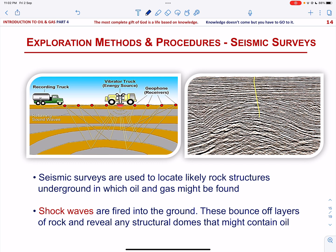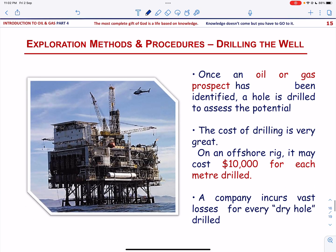Let us talk about drilling the well. A potential oil trap is called a prospect. Once a prospect has been identified, the next stage is to drill a hole into the top of the trap to see if it contains oil and gas. It is incredibly expensive to drill a hole — an offshore rig may cost more than $10,000 for every meter drilled. So if you are going to drill a hole 5,000 meters underground, it is going to cost about $25 million. Consequently, geologists have to be pretty confident that they are going to hit the oil. If they drill too many dry holes, they will soon lose their job.